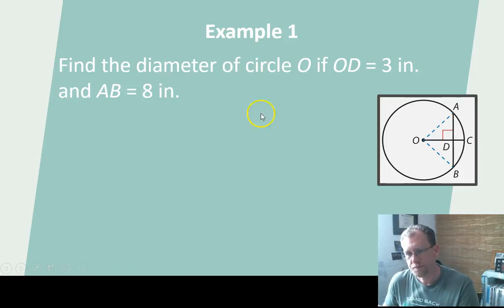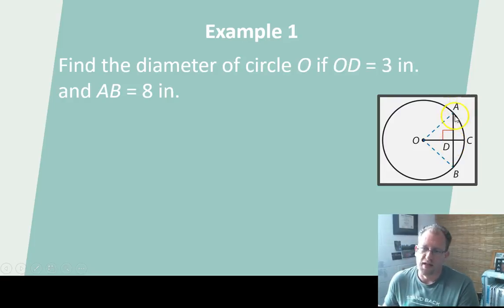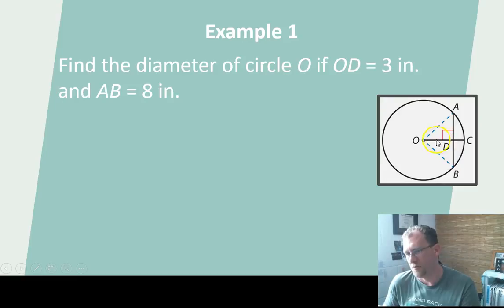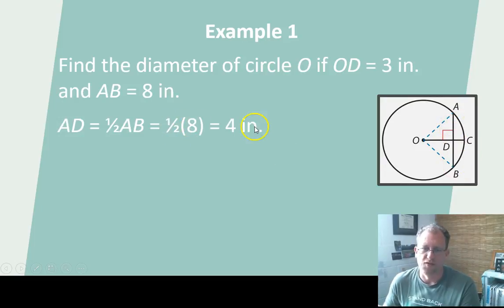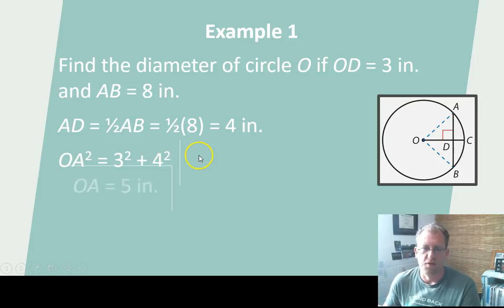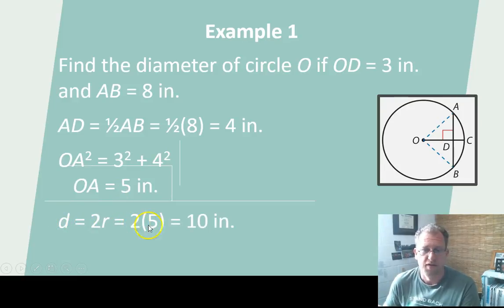Find the diameter of circle O if OD is 3 inches and AB is 8 inches. Now I have two right triangles — a 4-inch side here and a 3-inch side here. I can use the Pythagorean theorem to determine the length of the hypotenuse, which will be a radius. Once I have the radius, I can multiply by 2 and get the diameter. AD is one-half of AB, so half of 8 is 4. OA squared equals 3 squared plus 4 squared — that's the Pythagorean theorem. We find that OA is 5, and so the diameter is twice the radius: the radius is 5, so the diameter is 10.